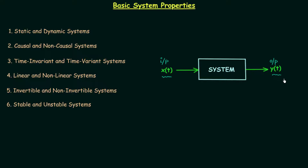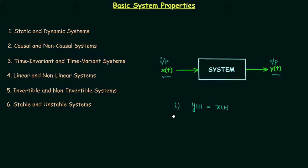The output y(t) depends on the input x(t) as well as the property or type of the system. Based on the input and the changes produced by the system, the output will have some value. Now let us understand what is future input, present input, and past input. Consider three cases: case 1 — output y(t) equals x(t); case 2 — output y(t) equals x(t-1); case 3 — output y(t) equals x(t+1).